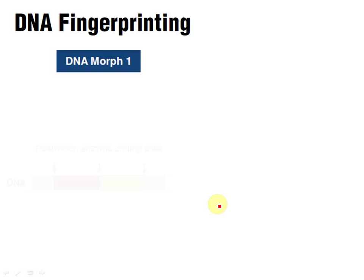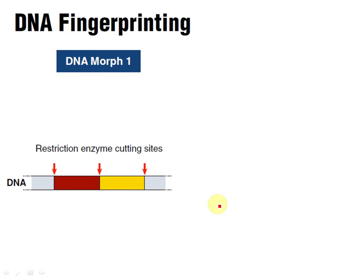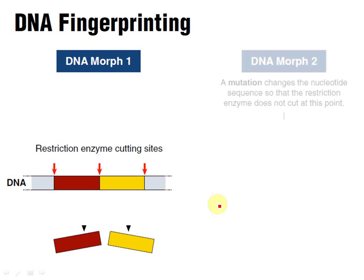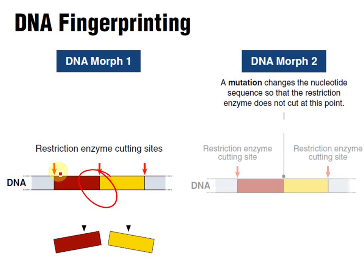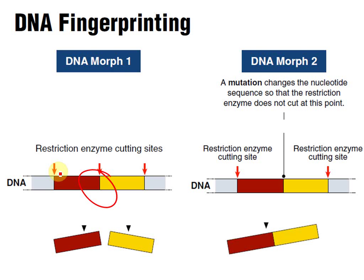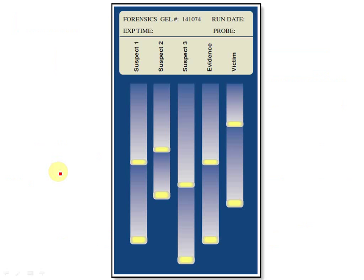So let's have a look at an individual example. This person here has the following restriction enzyme cutting sites and they're going to have two different lengths of DNA. Whereas another person has this mutation, which changes this area just here, so it doesn't get cut at this point. The restriction enzyme is now going to cut only in those two other bits and we're going to end up with a fragment of this length. So as you can imagine, on a gel electrophoresis, these two individuals are going to end up looking very, very different.